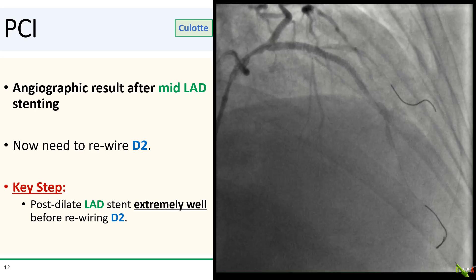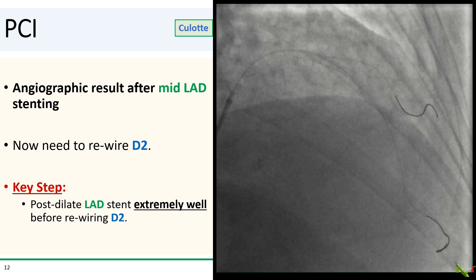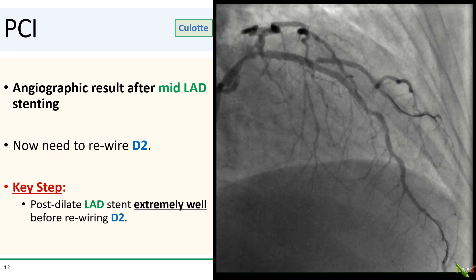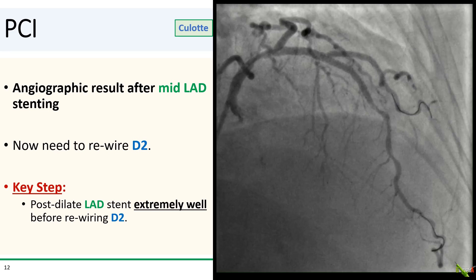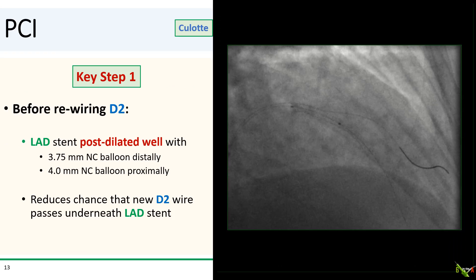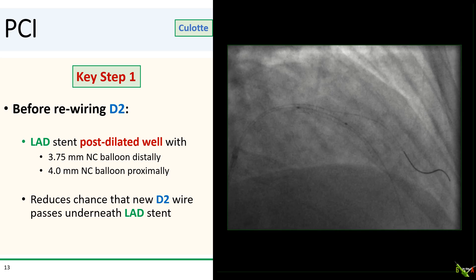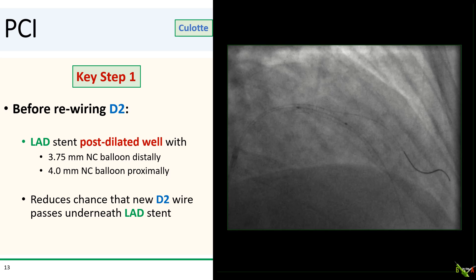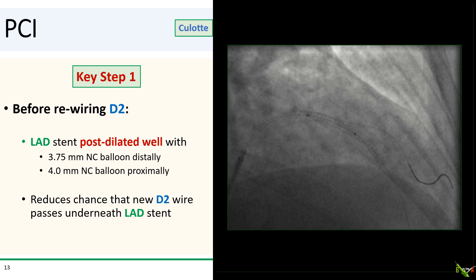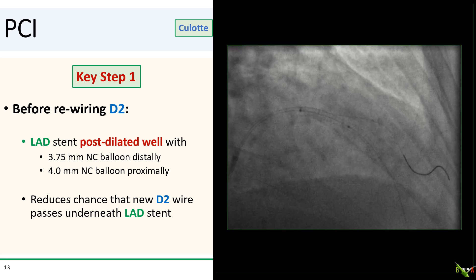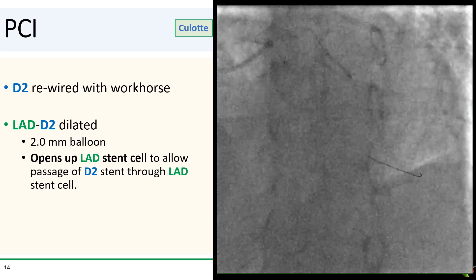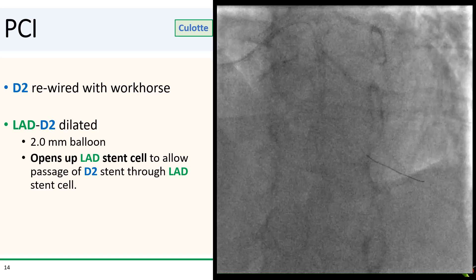Here is where we are after stenting the mid-LAD — not too bad. We now need to rewire D2, but this is key: remember to post-dilate the LAD stent extremely well before rewiring D2. We post-dilated the LAD with 3.75 and 4.0 mm NC balloons. Post-dilating the LAD stent before rewiring D2 reduces the chance that the new D2 wire will pass underneath the LAD stent. After post-dilating, we easily rewired D2 with a workhorse wire.